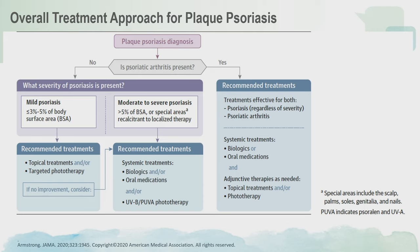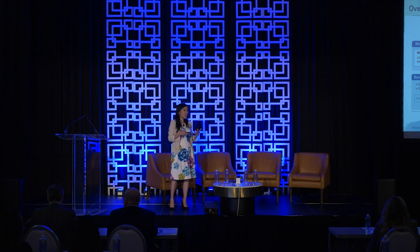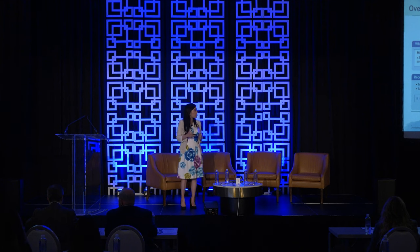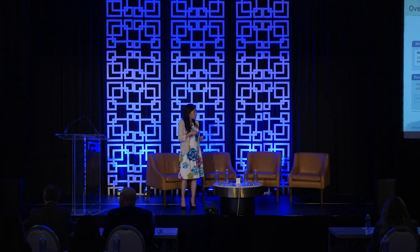Let's take the scenario that they don't have psoriatic arthritis — we'll talk about how to screen for that. Let's say they have skin-only psoriasis with no joint disease. Then you want to look at whether the patient has mild disease or moderate to severe. If they have mild disease, typically defined as less than 3% to 5% body surface area, our treatments will be more targeted — either targeted phototherapy or topical therapy.